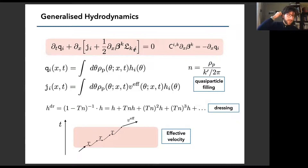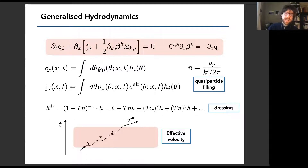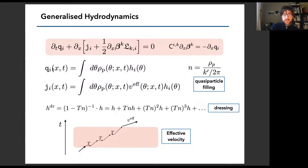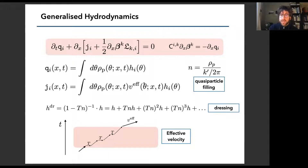The key point of generalized hydrodynamics is that you can re-parameterize this field of hydrodynamic parameters into a field of density of quasi-particles, rho(theta, x, t). At each position x, you have a function of theta that completely gives you all the information about the hydrodynamic parameters. It's just a parameterization, but a very useful one because it allows you to write Euler currents very easily — they take the form of just density times effective velocity.